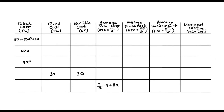Lastly, we have marginal cost, or MC, which is the cost of producing one more unit. That's going to be the change in our total cost divided by the change in quantity. And when we're dealing with continuous cost functions, this translates to the derivative of total cost with respect to quantity.